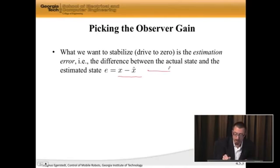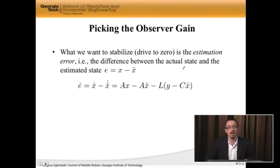Well, I would like e to go to zero, right? Because if I can make e go to zero, then x hat goes to x, which means that x hat is a good estimate of x. So what I would like to do is actually stabilize e, make e asymptotically stable.